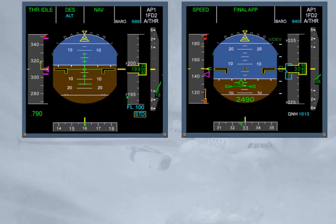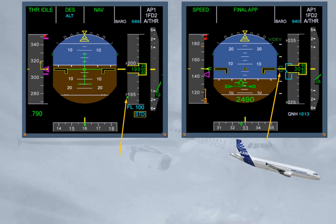Rule 2: Use of vertical deviation. The vertical deviation is provided in descent as a round symbol (yo-yo), and along a VDEV scale in approach (brick), where one dot represents 100 feet. It represents the vertical deviation between the current altitude and the computed descent or approach path.